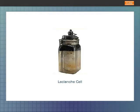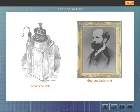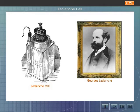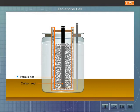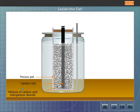Leclanché cell construction. George's Leclanché constructed the Leclanché cell in 1865. In this cell, a carbon rod is placed in a porous pot containing a mixture of manganese dioxide MnO2 and powdered carbon. The porous pot and an amalgamated zinc rod are placed in a glass jar containing saturated ammonium chloride solution.